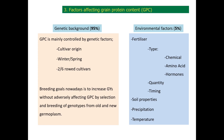So, what are the factors that affect grain protein content in wheat and barley? Genetic background accounts for 95% of the grain protein content, leaving only about 5% to environmental factors. Genetic factors such as the origin of the cultivar, the genotype, or the variety have a direct effect on grain protein content. The goal is to increase grain yield without adversely affecting the protein content, which can be achieved by selecting genotypes from old and new germplasm lines.